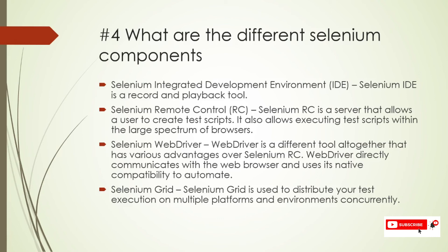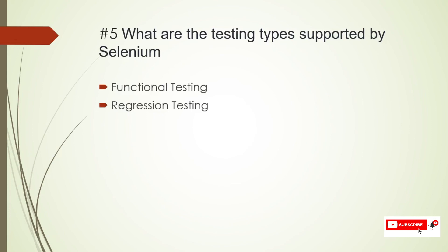WebDriver is used for native compatibility and automation. The fourth component is Selenium Grid, which is used to distribute tests across multiple platforms or different browsers simultaneously — enabling distributive testing. Selenium supports two testing types: functional testing and regression testing. In regression testing, we have components like retesting and regression test suites that can be executed based on our needs.